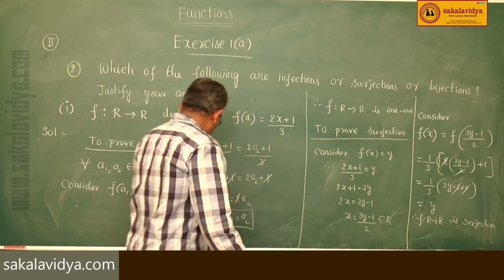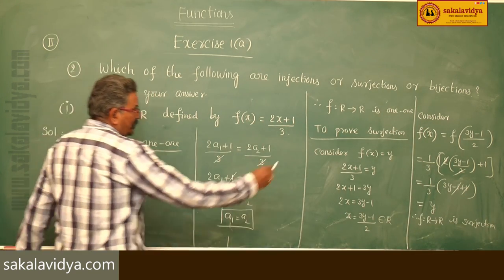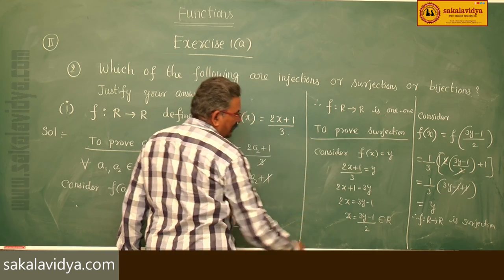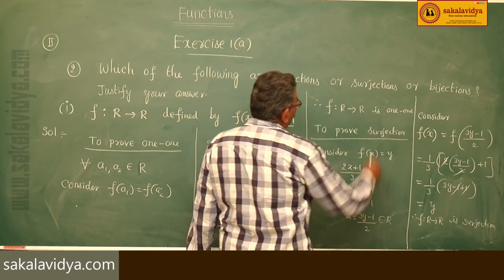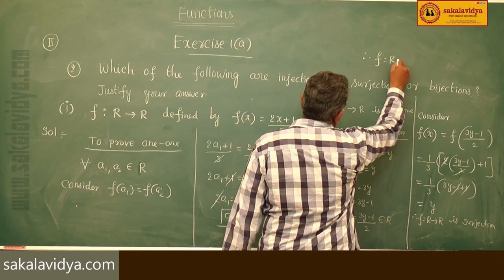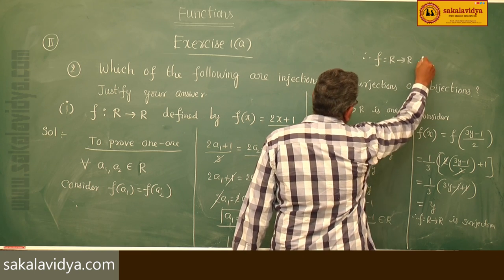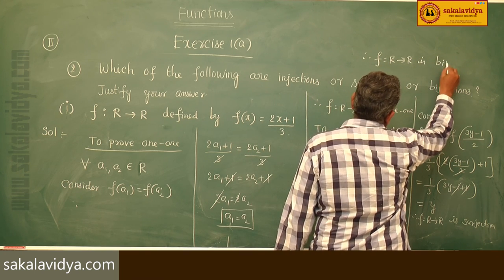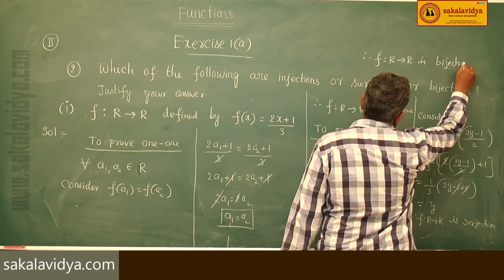Since f: R → R is both one-to-one (injection) and surjection, therefore f: R → R is also a bijection.